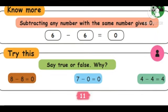See the examples in the book: eight minus eight equals zero, seven minus zero equals seven, four minus four equals zero. Look at the book for the same examples.